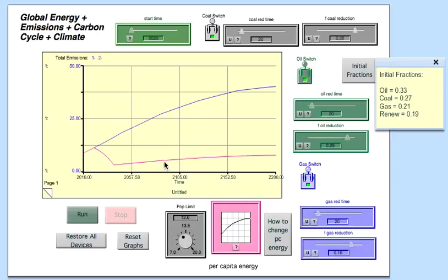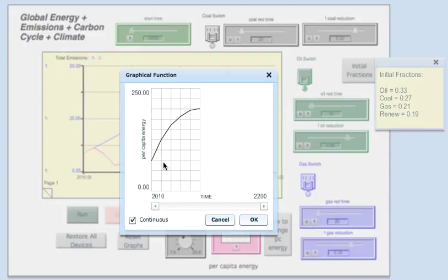We're going to compare this scenario where we reduce fossil fuel reliance to one in which we change the per capita energy. So the first thing we do is to turn off all the switches like that. So we're disabling that, and now we're going to change this per capita energy graph here.